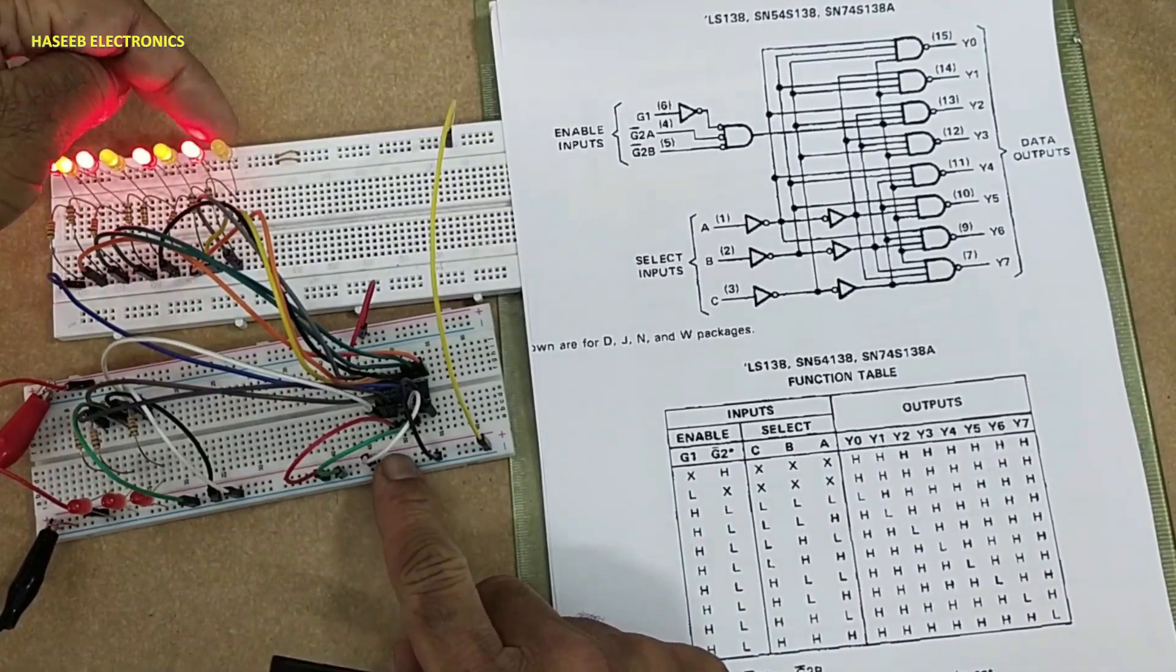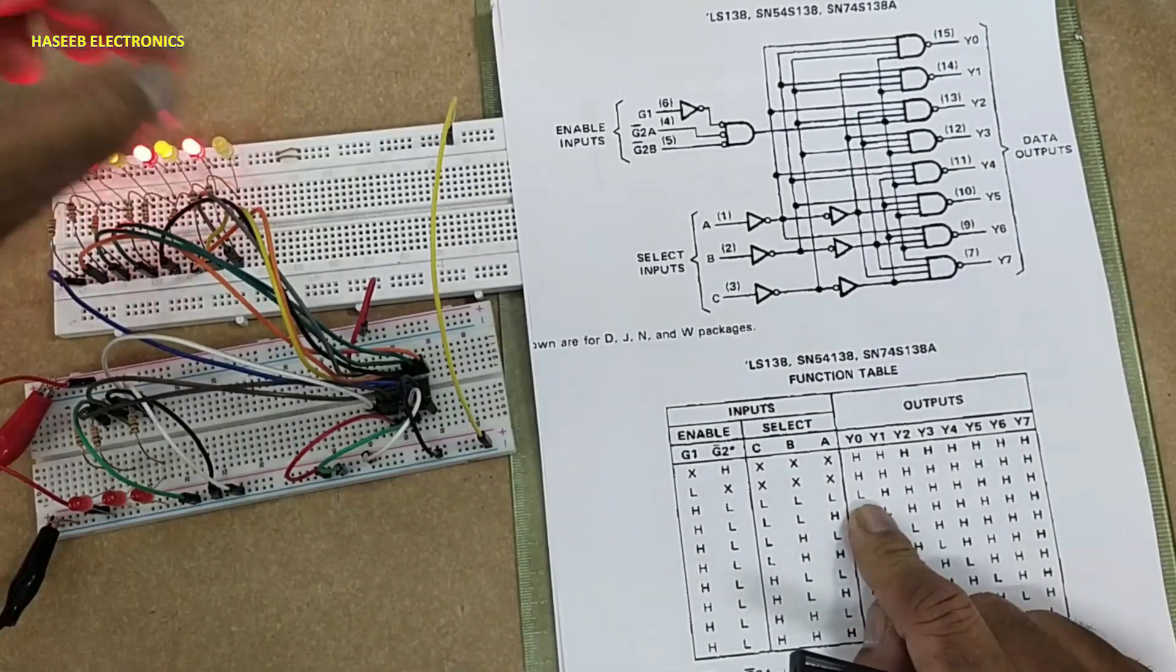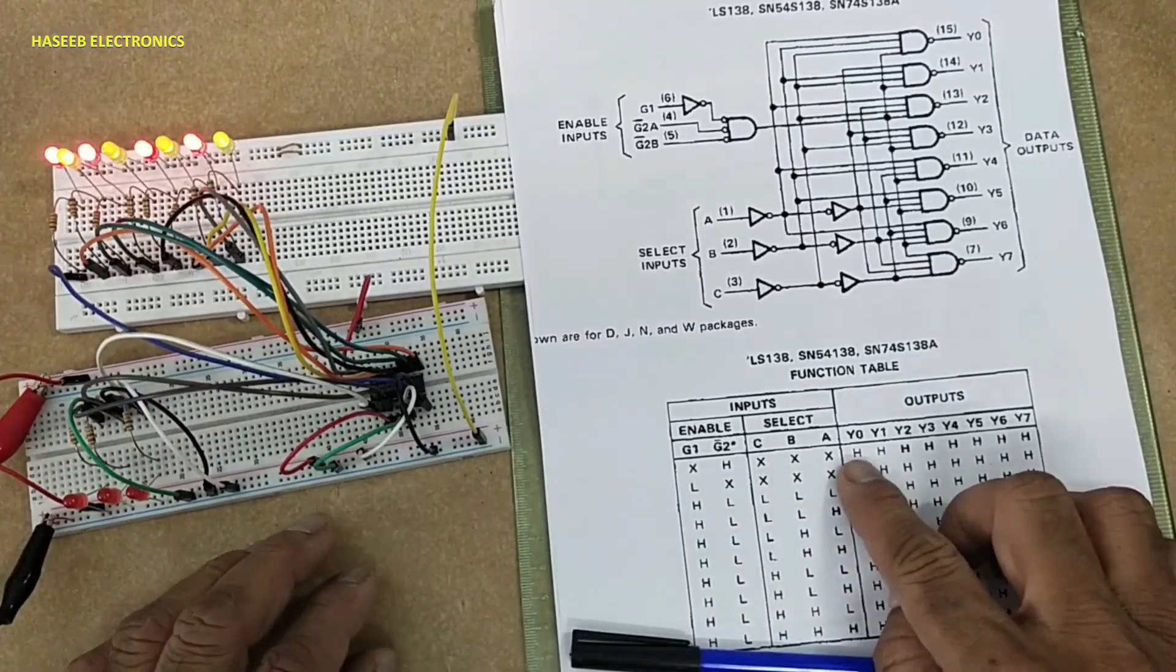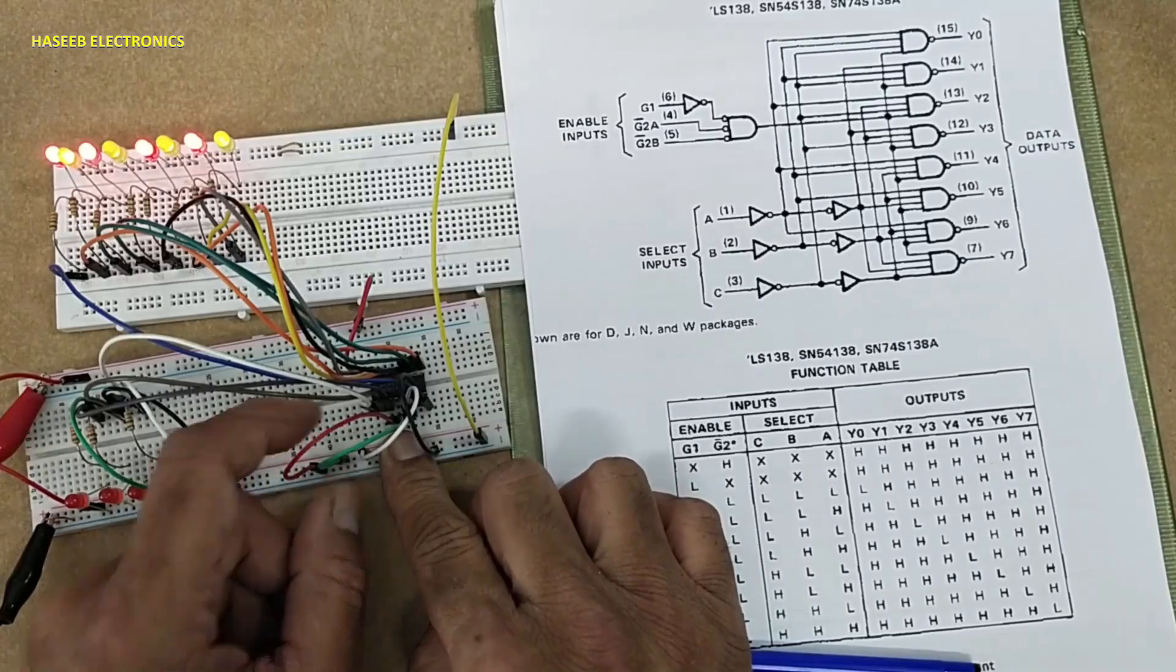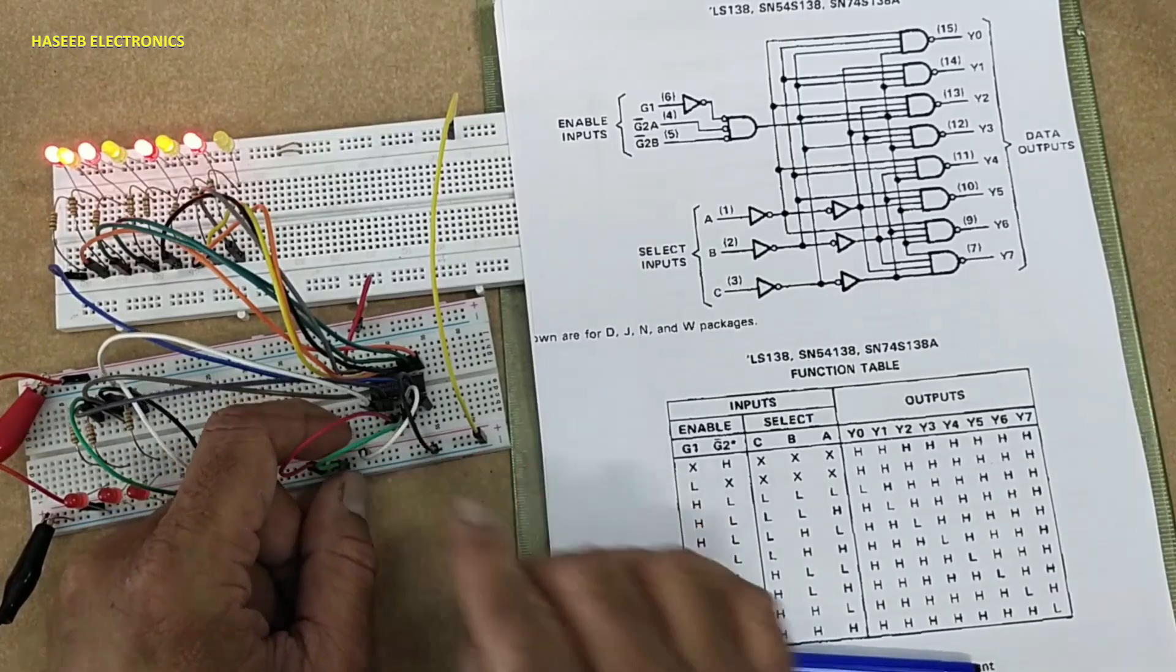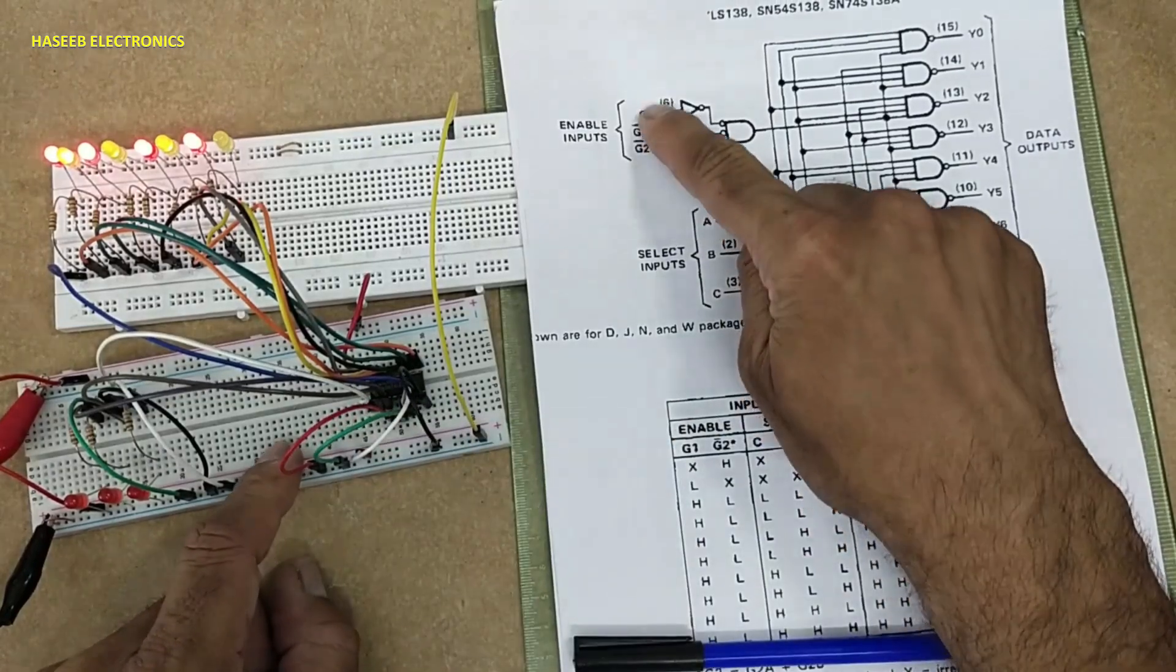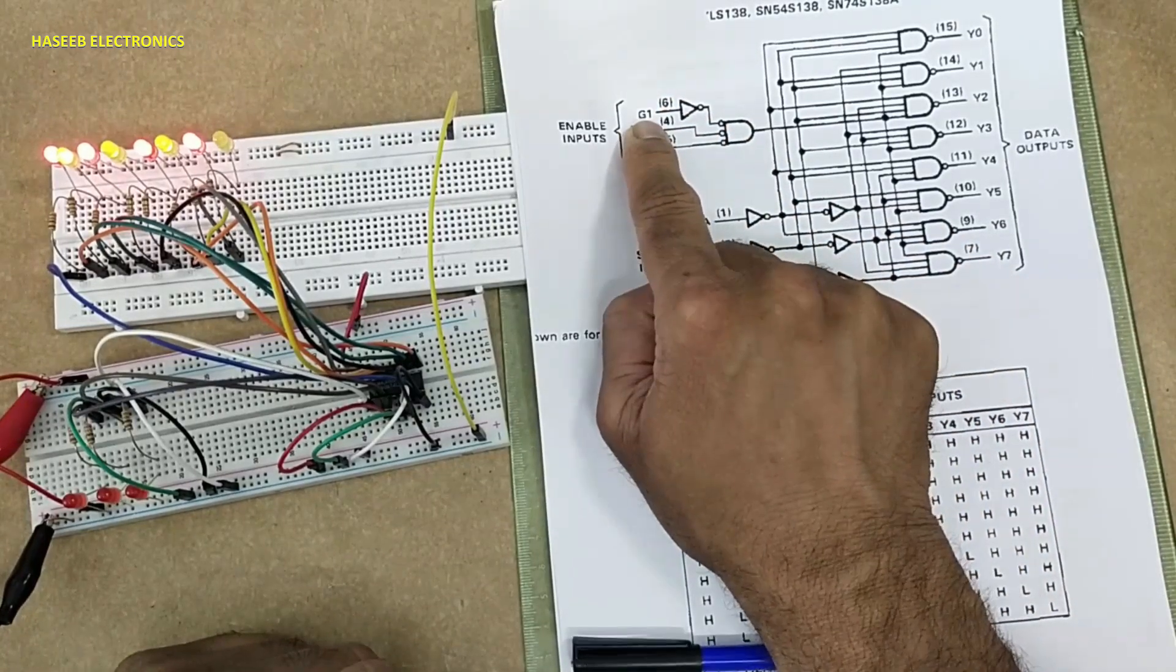Now we can see the first output is active low when all address inputs are low. If I turn G2B to high, all outputs are now high. In this state, if G1 is high, those are enable pins, so it is in locked state. If pin number six is connected to low, it will go into disabled state.